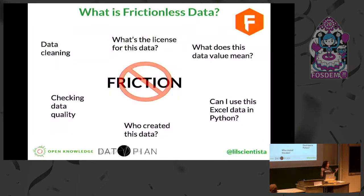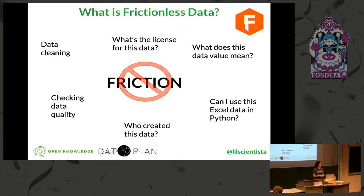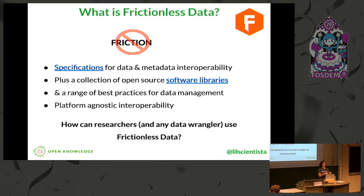So I've said frictionless data a lot, but what does that mean? Basically, we're trying to remove frictions in working with data. You can think of these as the data cleaning steps and questions such as: what's the license for this data? What does this data value mean? Can I even use this data? Can I use data that was created in Excel and then run it in my Python code? Who created the data? And things like checking the quality of the data. Frictionless data is a set of specifications for data and metadata interoperability, a collection of open source software libraries, and a range of best practices for data management. Importantly, it's platform agnostic, meaning that it's very interoperable and purposefully generalizable.